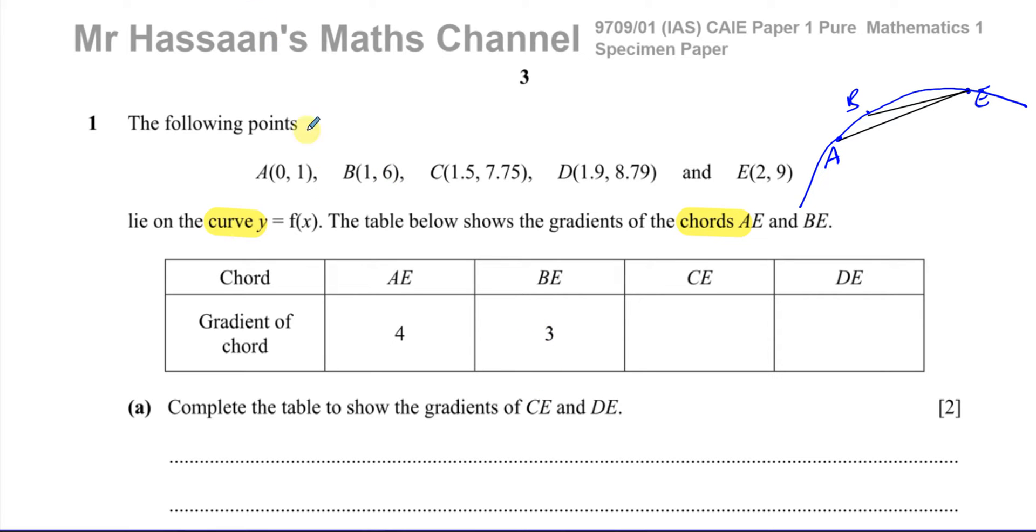They ask us to complete the table to show the gradients of CE and DE. As I just mentioned, the gradient between two points is given by the change in Y, you can say Y2 minus Y1, over the change in X, which is X2 minus X1. The point is that the change in Y is on the numerator. It's like rise over run. So it's the change in Y on the numerator and the change in X in the denominator.